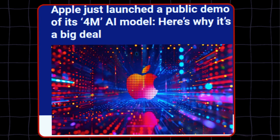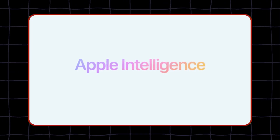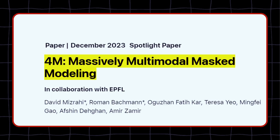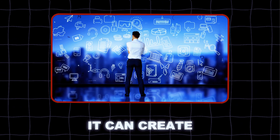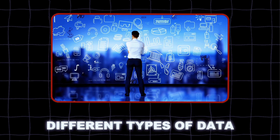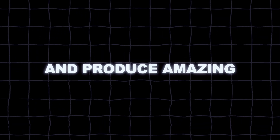Holy shit, guys. Apple has just released a new AI model that is unlike anything you have ever seen before. It is called 4M, and it stands for Massively Multimodal Masked Modeling. This is an AI model that can handle text, images, and even 3D data with ease. It can create, analyze, and manipulate different types of data, edit videos for you, and produce amazing results that will blow your mind.